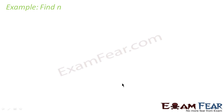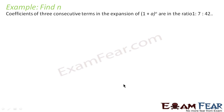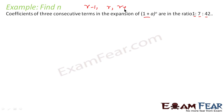Let's take one more example where we have to find the value of n. It says the coefficients of three consecutive terms in the expansion are in ratio 1, 7, 42. When we are supposed to take three consecutive terms, we can take r minus 1, r, and r plus 1. This is the normal convention we have.